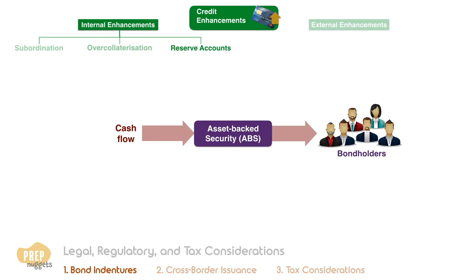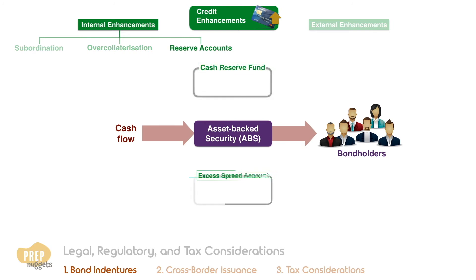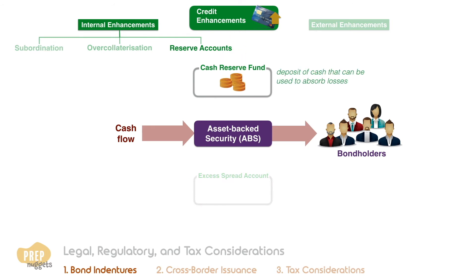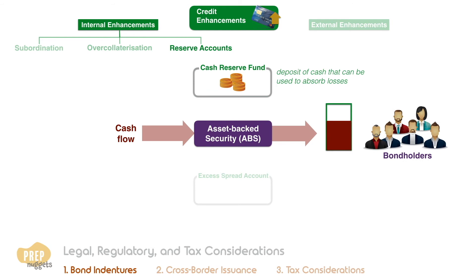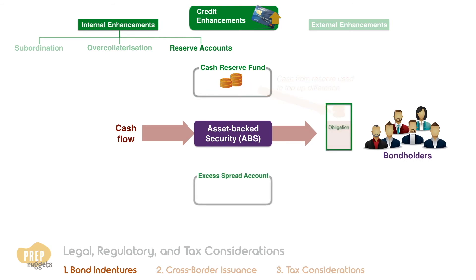Reserve accounts can come in two forms: a cash reserve fund and an excess spread account. A cash reserve fund is simply a deposit of cash that can be used to absorb losses. If the cash flow from the asset is insufficient to meet the promised payments, the cash from the account can be used to top up the difference.